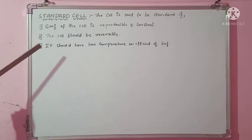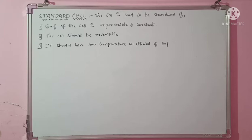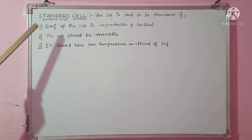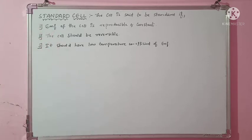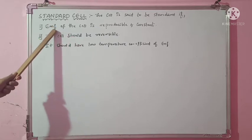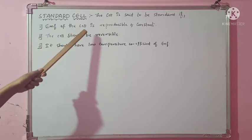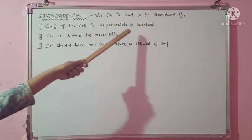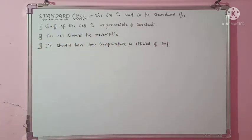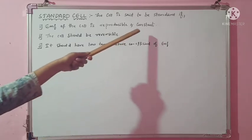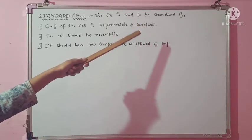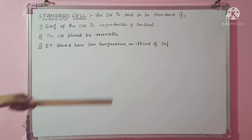Here I have written three conditions. If a cell needs to be standard, it should satisfy all three of these conditions. The first is: the EMF of the cell is reproducible and constant — meaning whatever the EMF of the cell is, it should always remain constant. It should not vary or change. This is the first criteria.